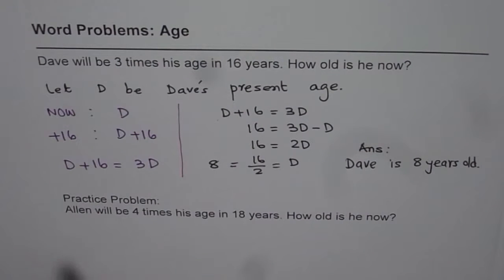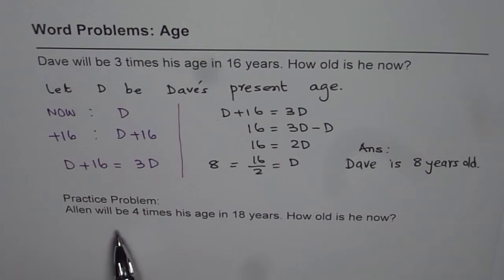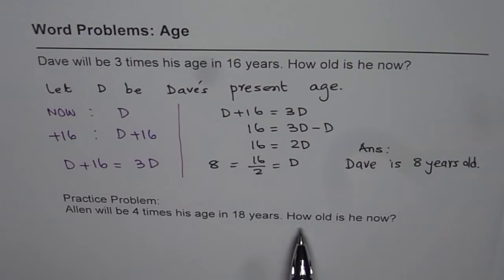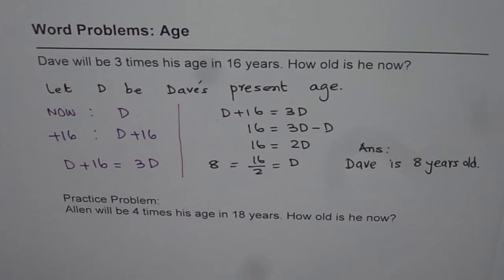Here is a practice question for you. Alan will be 4 times his age in 18 years. How old is he now? You can follow this same pattern and solve the question. I hope that helps. Thank you.